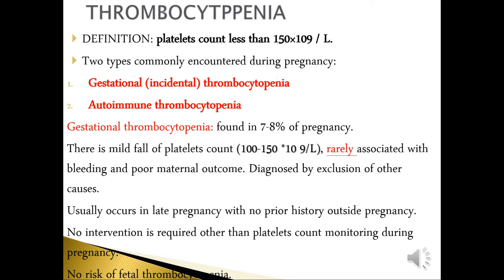Thrombocytopenia is defined as a platelet count less than 150. There are two types commonly encountered during pregnancy: gestational thrombocytopenia and autoimmune thrombocytopenia.